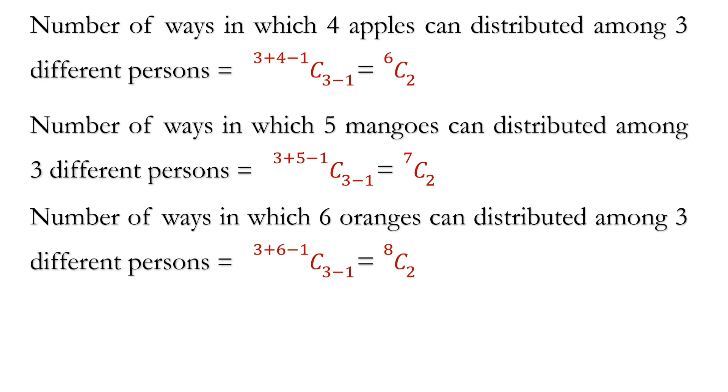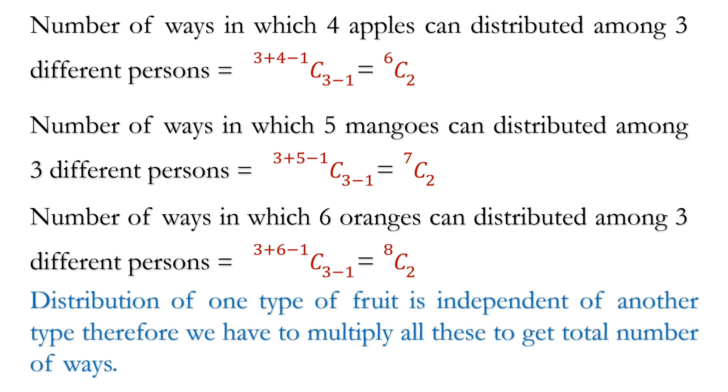It is similar to the example that 2 dice are thrown. Then whatever number we get on the first dice is completely independent of the whatever number we got on second dice.